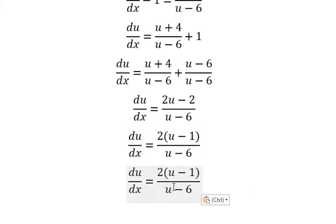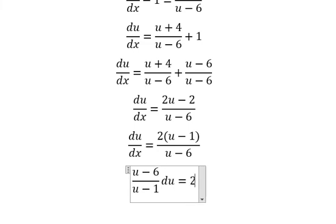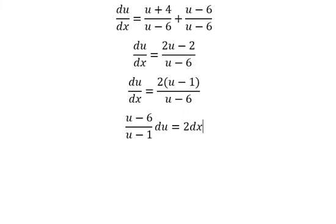So u minus one over u minus six we put on the left, du we put on the right. Now we put the integration for both sides.